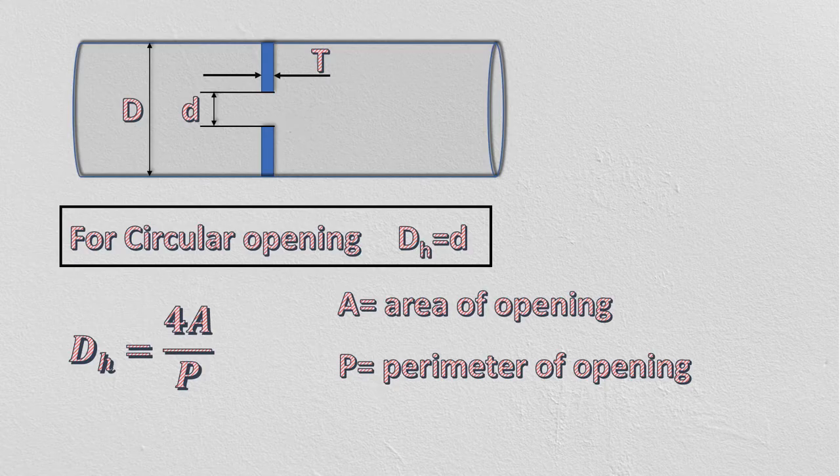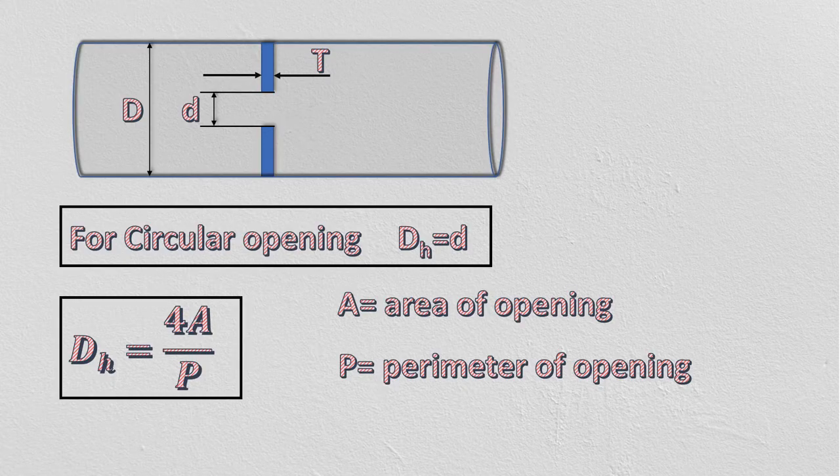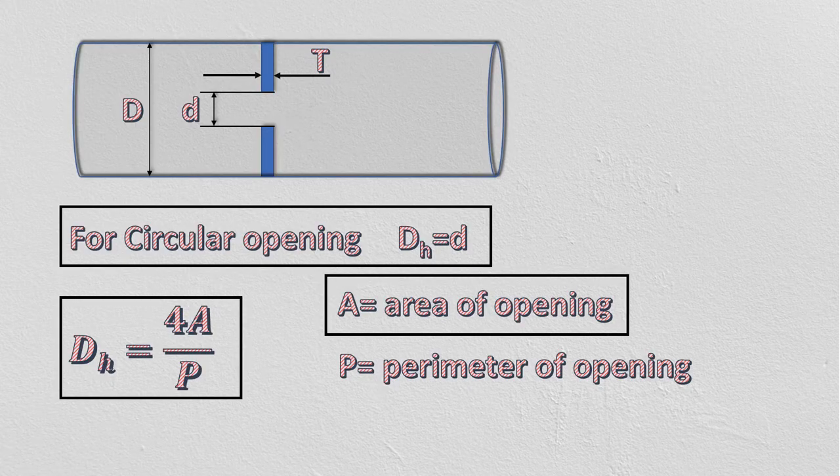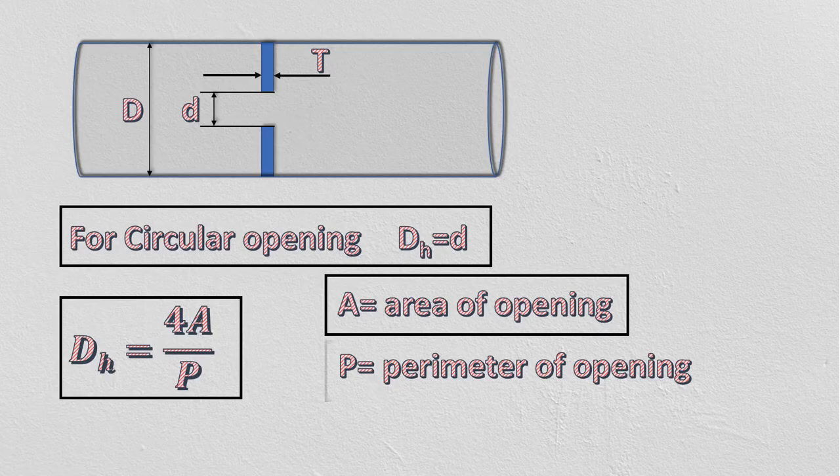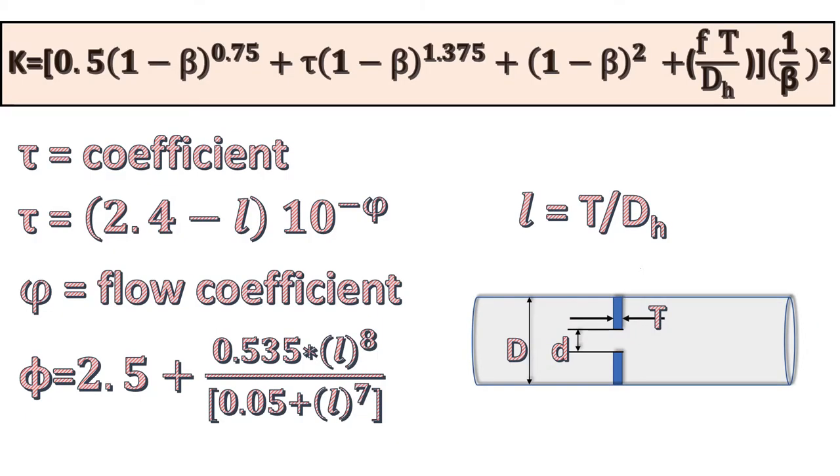For other than circular shape, you can calculate hydraulic diameter using this equation, where A is the cross-sectional area of orifice opening and P is perimeter. Symbol τ is the coefficient representing the effect of the orifice plate thickness and inlet head shape.